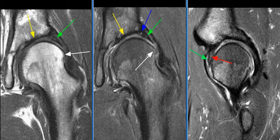This case is a 47-year-old female with history of left hip pain. MRI examination of the left hip is performed. The acetabulum is shallow, consistent with developmental dysplasia.